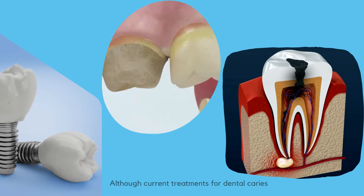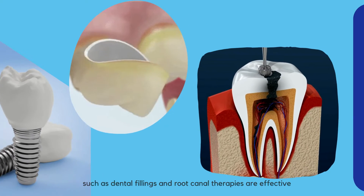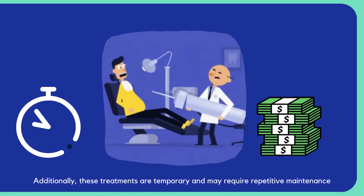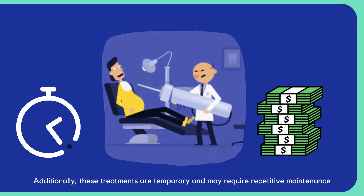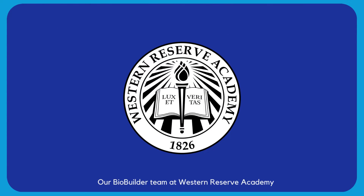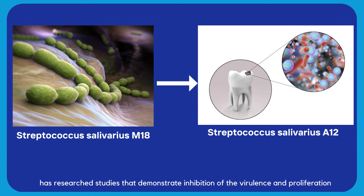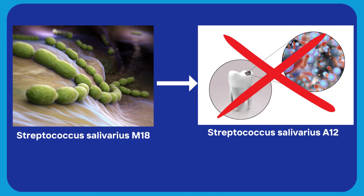Although certain treatments for dental caries, such as dental fillings and root canal therapies, are effective, they can be painful and expensive for patients. Additionally, these treatments are temporary and may require repetitive maintenance. Our BioBuilder team at Western Reserve Academy has research studies that demonstrate inhibition of the virulence and proliferation of S. mutans by Streptococcus salivarius A12.